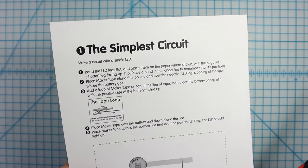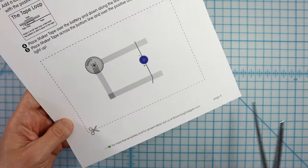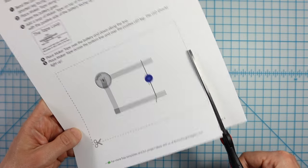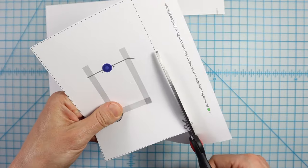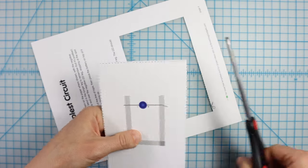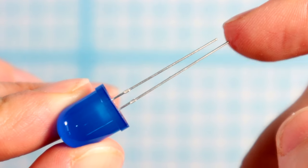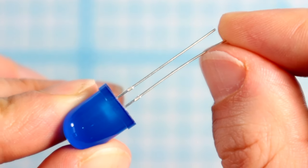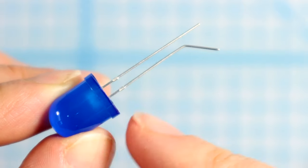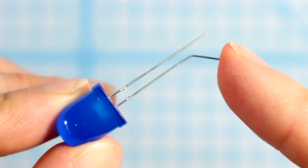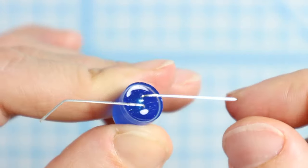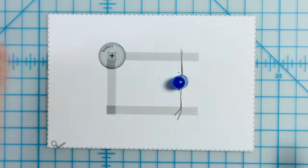This is the simplest circuit with a single LED. Print out the templates on cardstock if you can. Thick paper is easier to work with, but printer paper will work in a pinch. Bend the LED legs flat and place them on the paper where shown. The negative leg is shorter and the positive leg is longer. To remember which is which, you could put a small bend in the longer leg to remember that that one's positive when it's bent flat.